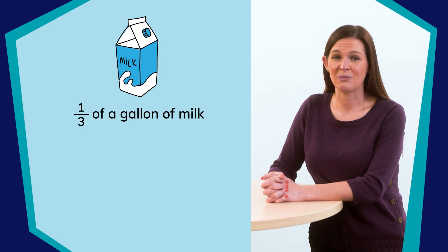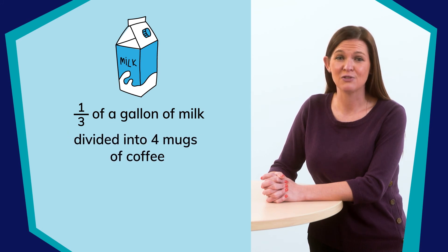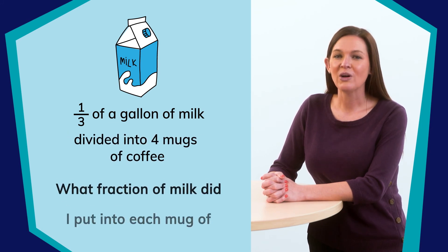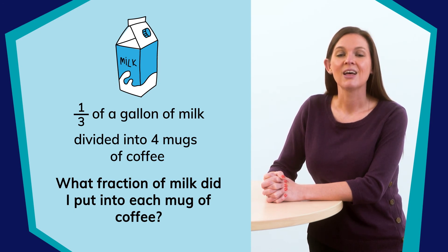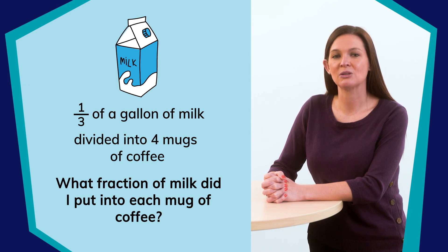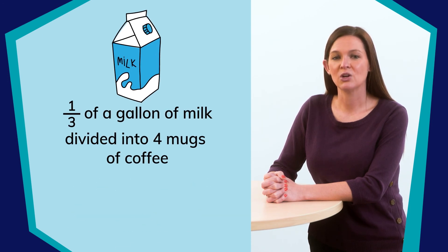Now, let's change it up just a bit more. I had one-third of a gallon of milk in my fridge, and I divided it into four mugs of coffee. What fraction of a gallon of milk did I put into each mug of coffee? How is this problem different from the problem we just completed? Yes. This problem has us dividing a fraction by a whole number. Let's write the equation. One-third divided by four.